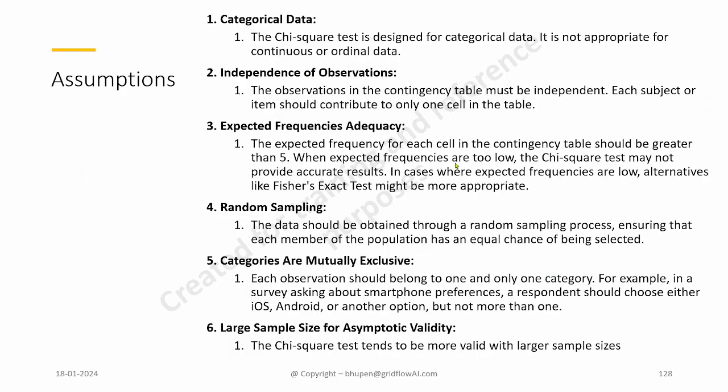There are certain assumptions here of a chi-square test. This is only for categorical data, and the sample should be independent. Expected frequency should be at least greater than 5. For each cell, the expected frequency should be greater than 5. Otherwise, the results are not so reliable. Random sampling is required, and the categories are mutually exclusive. Large sample size for asymptotic validity, that means it is more valid with a slightly larger sample size.